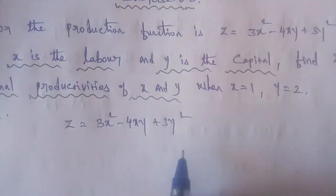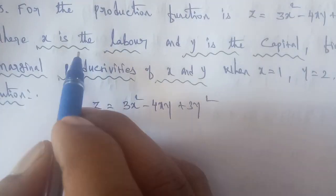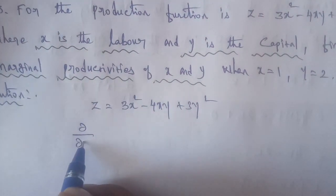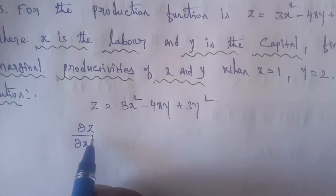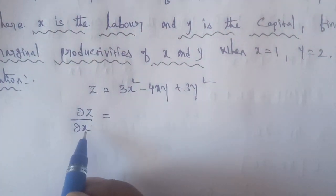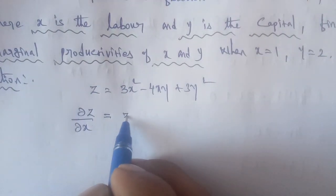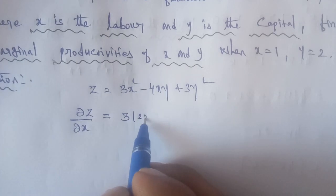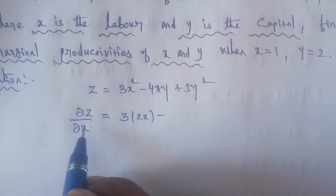So, partial differentiation with respect to X — that is the marginal product of labor. Taking the partial differentiation with respect to X: differentiating 3X squared gives 6X, minus 4XY differentiated with respect to X gives minus 4Y.